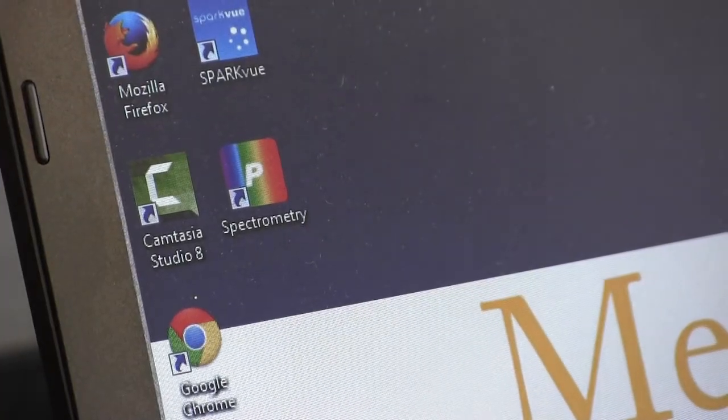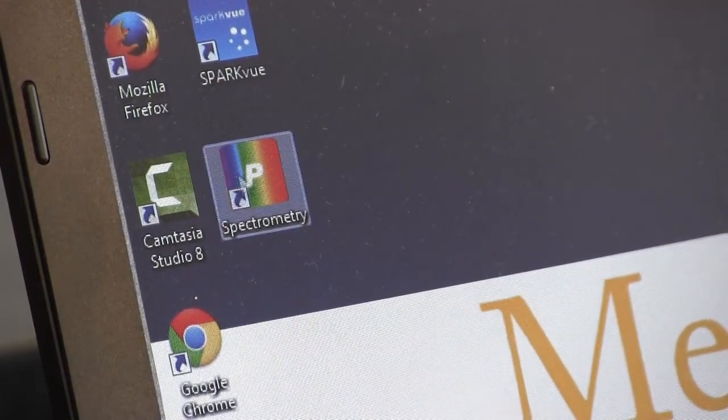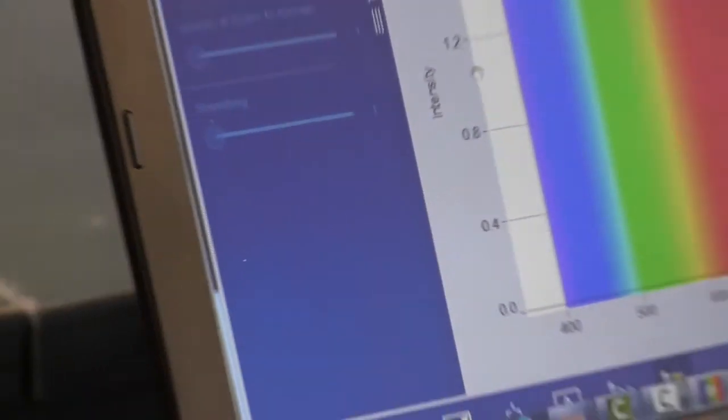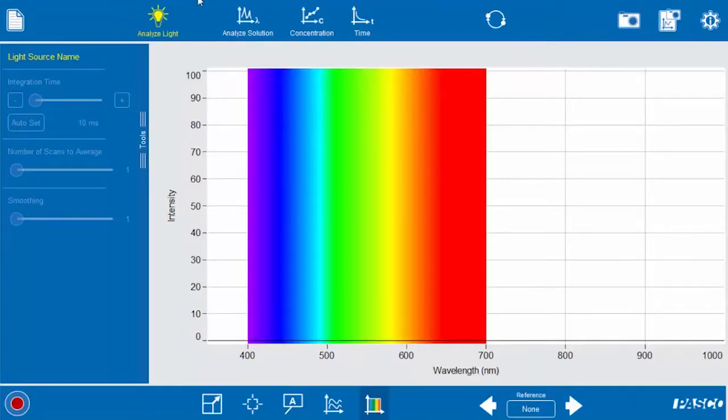After your spectrometer is plugged into your computer or attached to your iPad, you will launch the spectrometry software. Because we're going to be analyzing light, you want to make sure this yellow button that says analyze light is illuminated, and then you take the other end of the probe and point it at a light source.